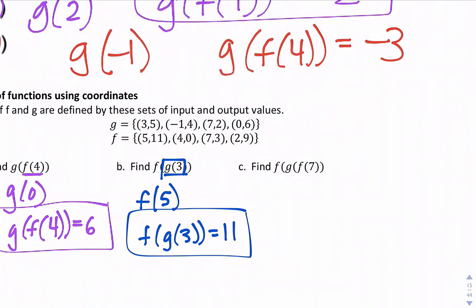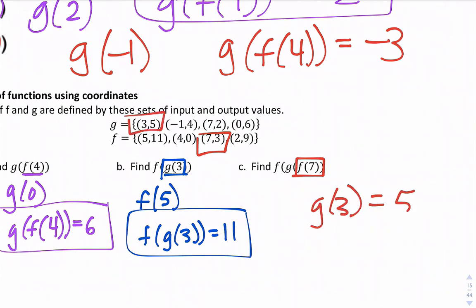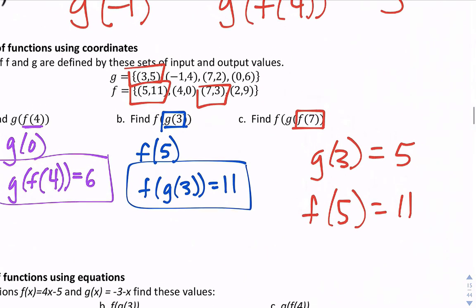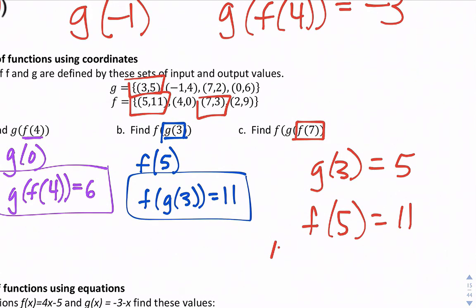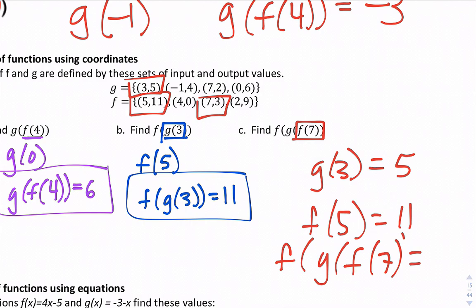One more using coordinates — a three-deep composition: f(g(f(7))). Start with f(7) = 3. Then find g(3) = 5. Then find f(5) = 11. So f(g(f(7))) = 11.